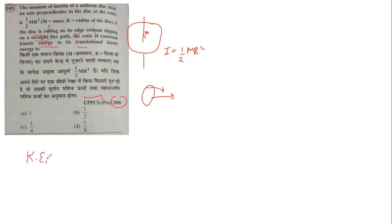What is the ratio of rotational kinetic energy? The rotational kinetic energy is half I omega squared, where I is moment of inertia and omega is angular velocity.